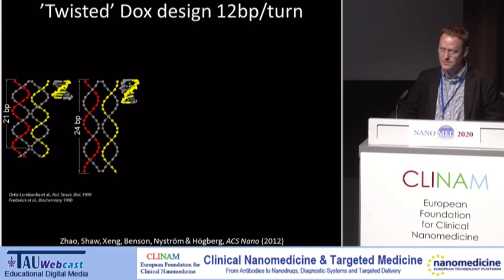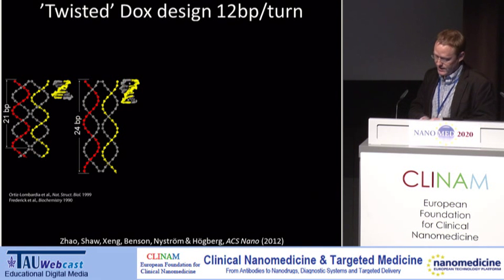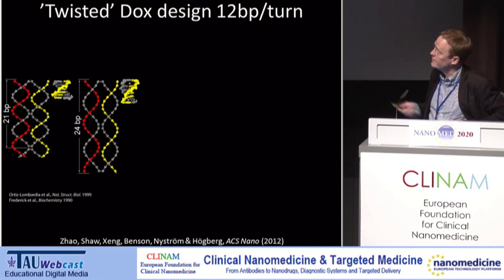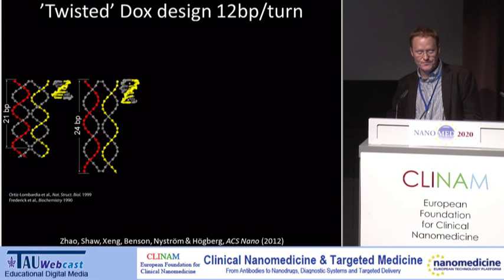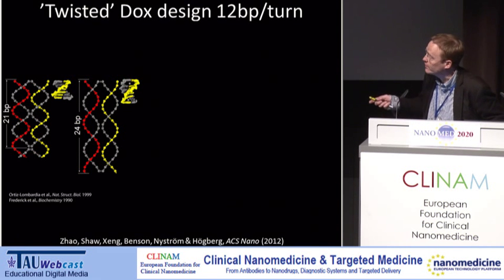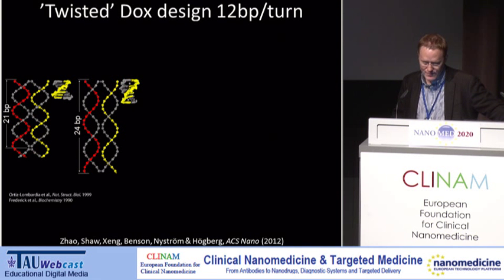Doxorubicin intercalates DNA and is known to deform the DNA structure locally. Crystallography data from Frederic et al. shows DNA intercalated with dox, to scale with the previous model. It turns out that doxorubicin changes the DNA twist and elongates the DNA, making it thinner. If we used the normal 21 base pairs per crossover, it wouldn't work — we need to go 24 bases to make two full turns, meaning a design with 12 base pairs per turn.